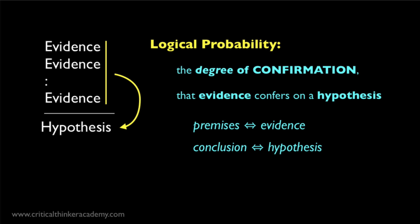Another way this is often framed is in terms of the degree of confirmation that evidence confers on a hypothesis, where the evidence is identified with the premises of an argument, and the hypothesis is identified with the conclusion. When you phrase it in this way, you're making explicit the connection between logical probability and some very basic issues in scientific reasoning, like how to estimate how likely it is that a scientific theory is true, given all the evidence that we have so far.